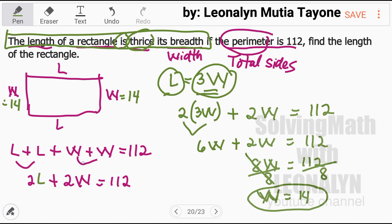Now, if this W is 14, it's 14. 14 times 2, that is 28.